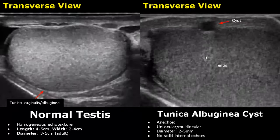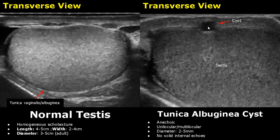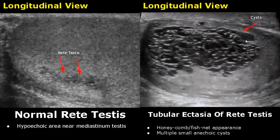Tunica albuginea cyst is a small anechoic cyst in this layer, which may be unilocular or multilocular — meaning it can have septations. The diameter is between 2 to 5 millimeters and there are no solid internal echoes.